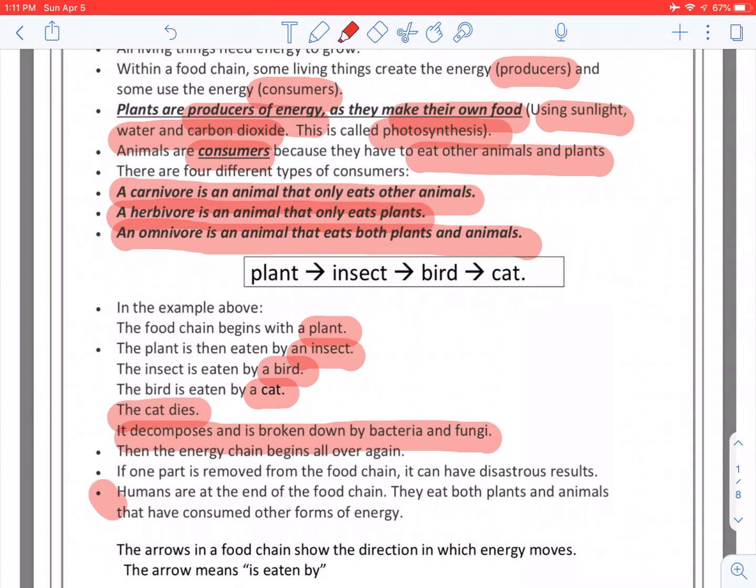Then the energy chain begins all over again. If one part is removed from the food chain, it can have disastrous results. Humans are at the end of the food chain. They eat both plants and animals that have consumed other forms of energy. Let's talk about China and the coronavirus. It was a snake that ate the bat and the human that ate the snake, and the whole world got coronavirus because of a food chain.